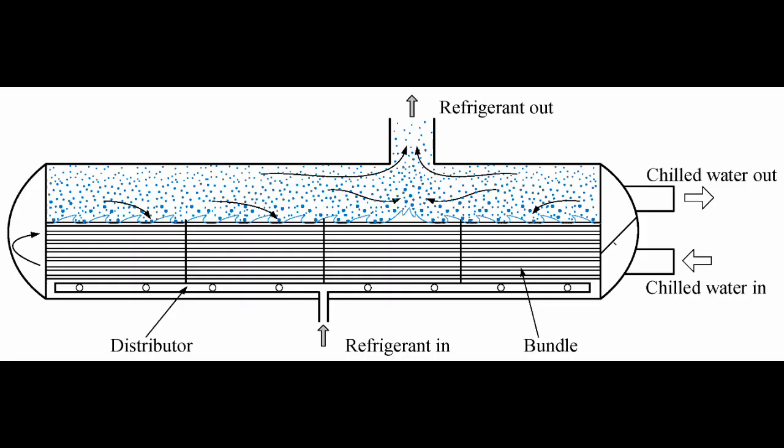Flooded type coolers. Parts used in a flooded type cooler and their functions are as follows: one, shell — where refrigerant flows; two, tubes — where water flows. In a flooded type cooler, refrigerant enters from the bottom of the cooler and exits from the top, while water enters from the side and exits from the other side, if it is a single pass type cooler.